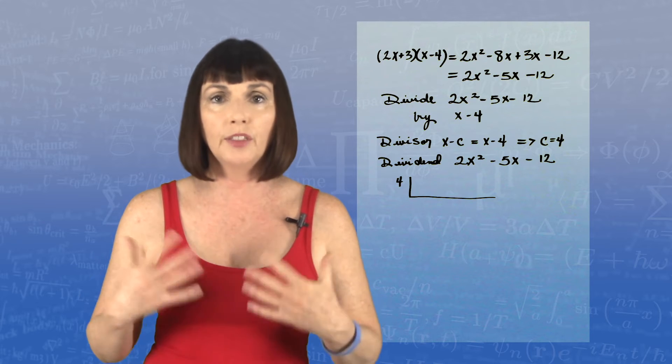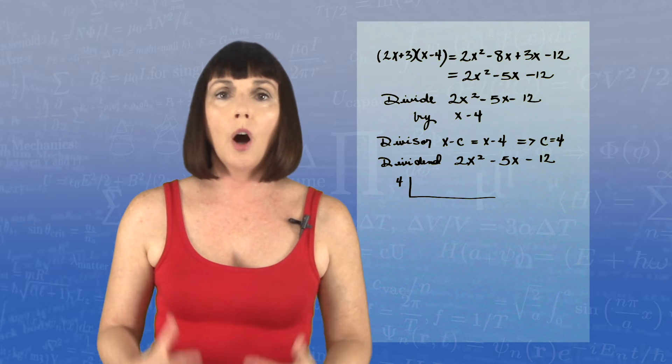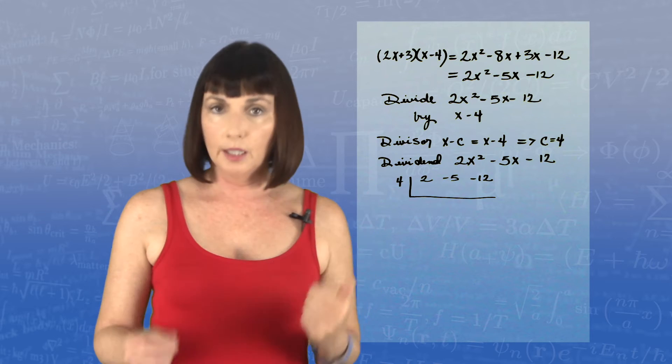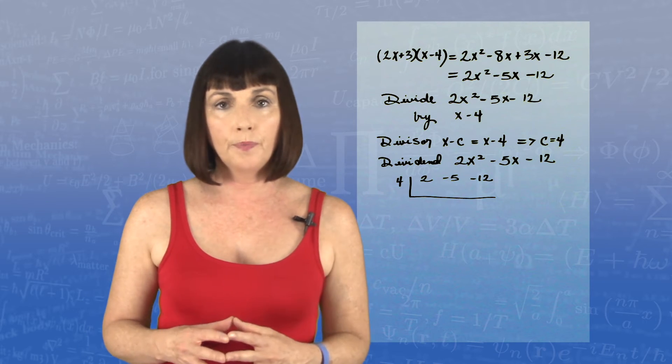The coefficients of the thing that you're dividing. So our coefficients are 2, negative 5, and negative 12.